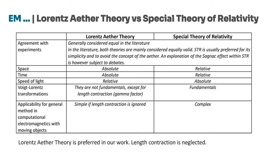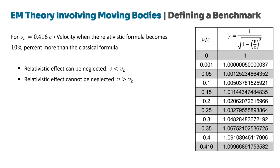For computational electromagnetics involving moving objects, Lorentz-Ether theory is simpler to apply, especially when ignoring the gamma factor, whereas special relativity involves a more complex implementation. Since the Lorentz-Ether theory provides a simpler approach for our computational work, we will adopt it and neglect the gamma factor during the main analysis. However, we can still incorporate the gamma factor during the pre-processing and post-processing stages if needed. To determine when relativistic effects become significant, we define a benchmark by examining the gamma factor in terms of the ratio V/C. When V/C is less than 0.416, the relativistic effects contribute less than 10% to the results, allowing us to neglect these effects.